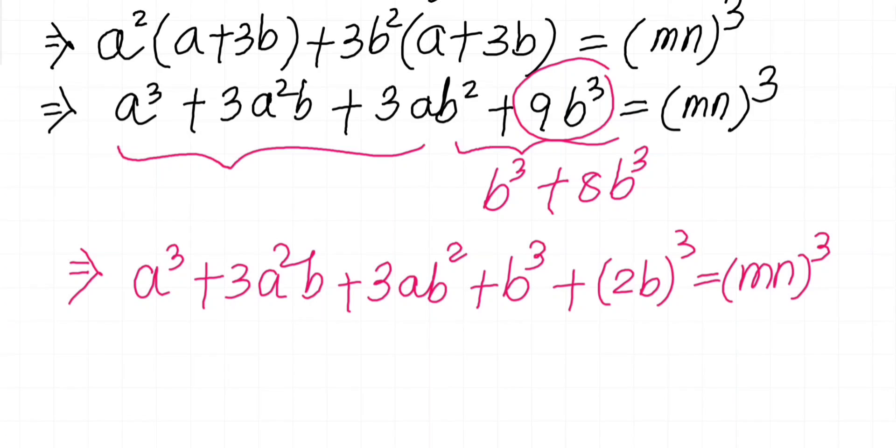I have rearranged this 8b³ into (2b)³. So this is nothing but (a+b)³, and then we have (2b)³ equals (mn)³.